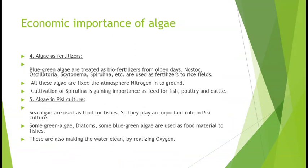4th point: Algae as Fertilizers. Blue green algae are treated as bio-fertilizers from olden days. Chaawal ke kheton mein kisaan upaj badhaane ke liye blue green algae — Anabaena, Nostoc, Cytonema, Spirulina — daalte hain, jise hum local bhaasha mein 'kaai ya kanji' kehte hain. Kaai ya kanji ka prayog chaawal ke kheton mein karne par inka main function hota hai nitrogen ka fixation karna.